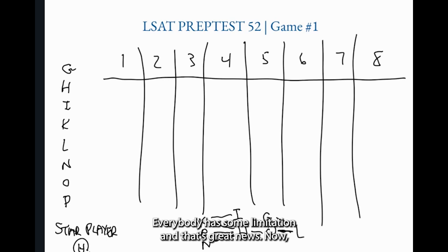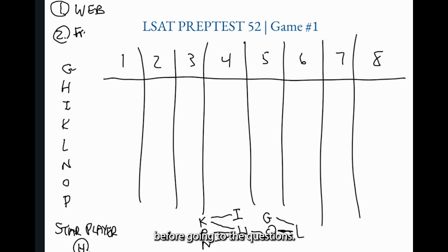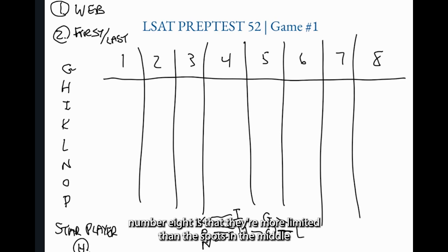Now, one of the things that you want to do as part of your setup. We made our web. There's another important kind of inference that you want to draw before going to the questions and it's called the first last inference. If there are very limited number of players that could be either first or last, it's important to infer that early on. The reason we're focusing on first and last, spot number one and spot number eight, is that they're more limited than the spots in the middle because they're on the end. You can't go further right than eight and you can't go further left than one.